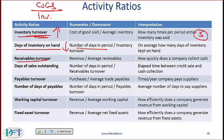Receivables turnover: accounts receivables goes in the denominator — try to use the average number for the year whenever you have balance sheet figures. Revenue is what results in accounts receivables, so revenue goes in the numerator; sometimes you may see credit sales instead. When comparing companies, make sure you use the same exact formula — if using credit sales over accounts receivable for one company, use the same for the other.